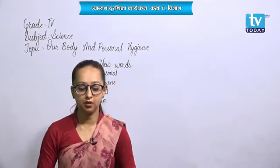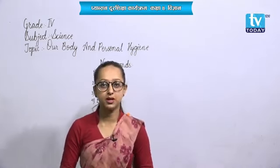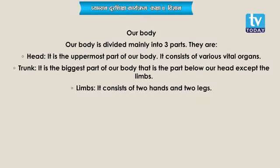Now let me draw your attention to the three major parts of our body: head, trunk, and limbs. The head is the uppermost part of our body. Our head consists of various vital organs — vital means necessary or essential. These organs include the brain, eyes, ears, nose, and mouth. The uppermost part of our head is covered by hair, which is also an important part of our body.